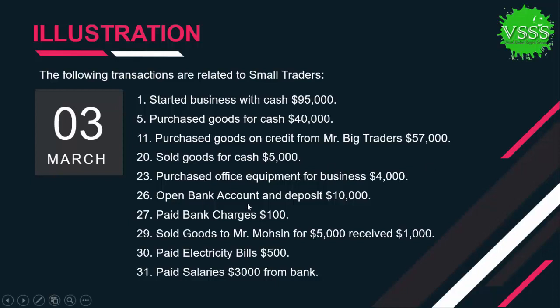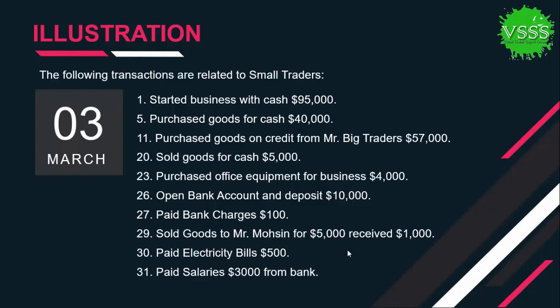Next transactions include: opened a bank account and deposited $10,000; paid bank charges $100; sold goods to Mr. Mohsin for $5,000 and received cash $1,000; paid electricity bill $500; and paid salaries $3,000 from bank.